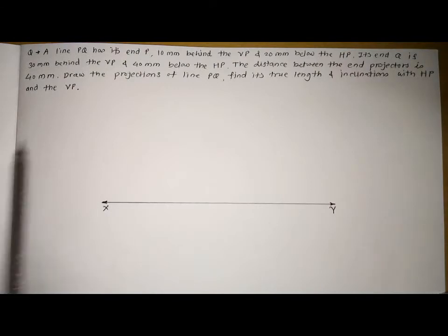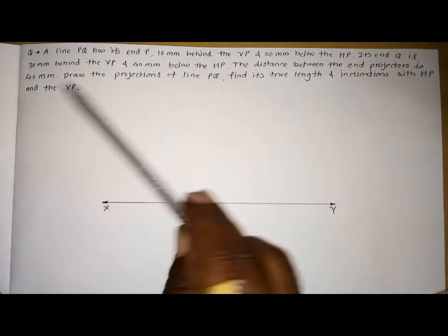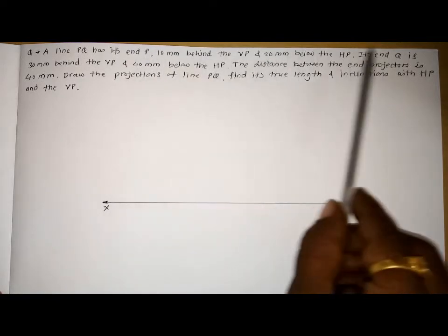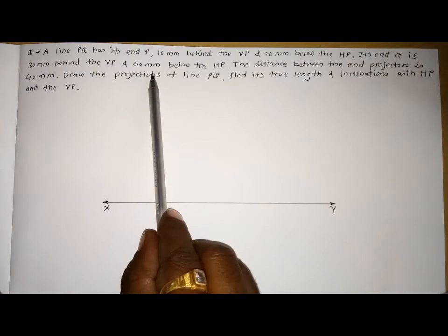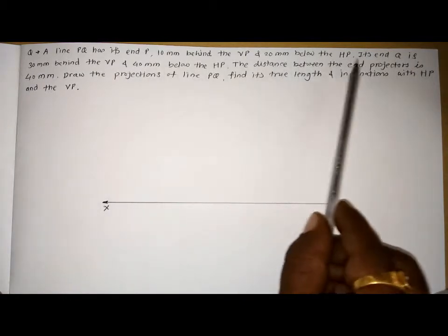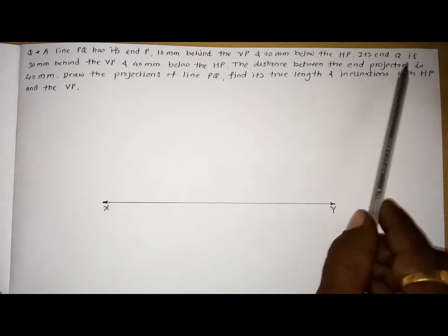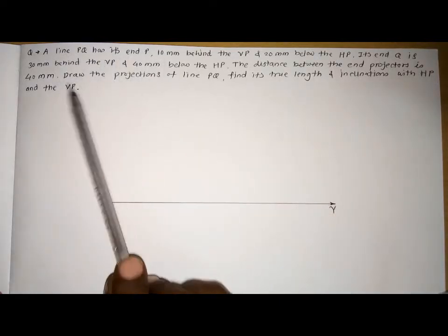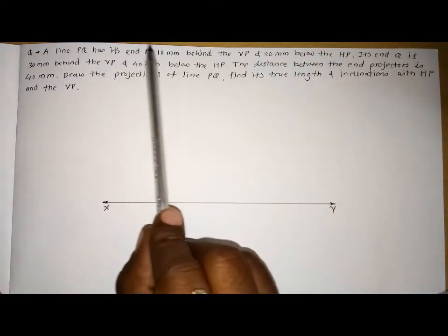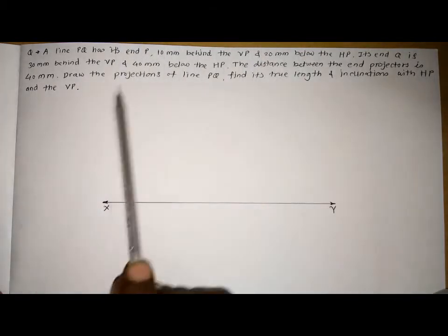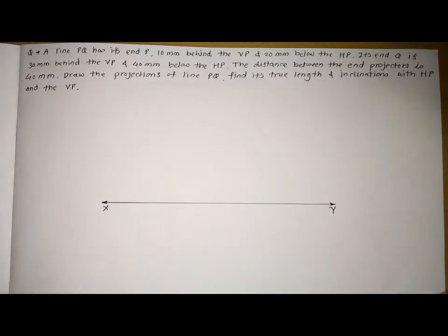In this problem, the position of point P is given as well as the position of Q. The distance between the end projectors means the distance between the projectors of P and Q is given. This means the front view of point P and Q, and top view of P and Q, are both given. So the front view and top view of this line are given in the problem and we'll start solving.